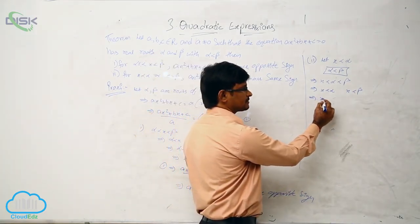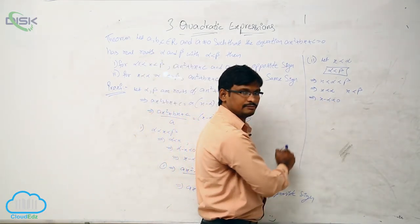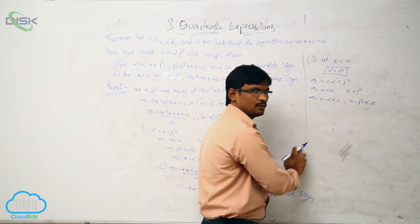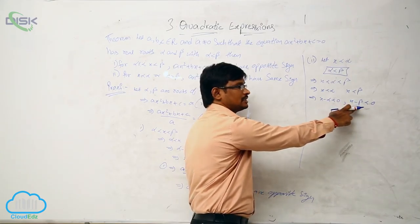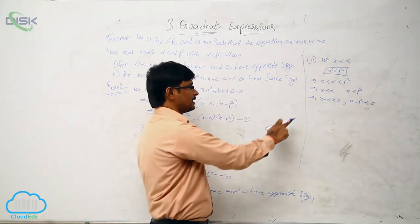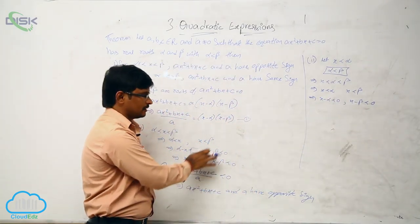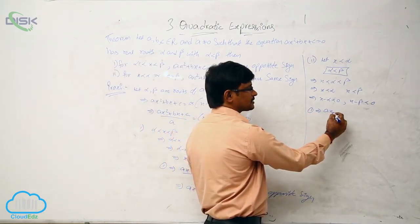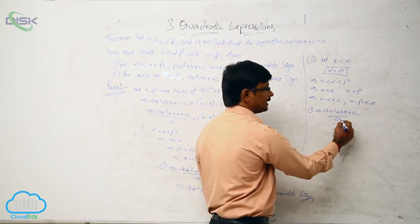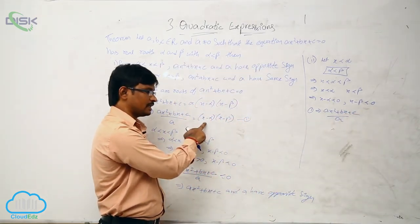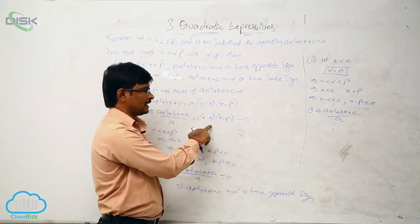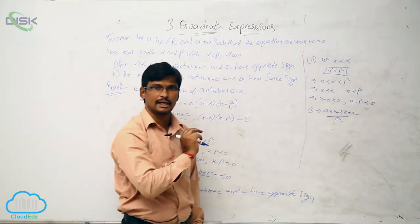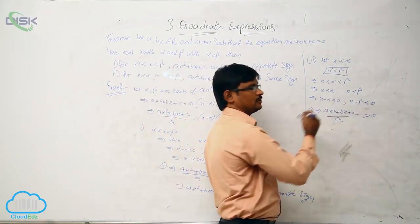So x minus alpha is less than 0, and x minus beta is less than 0 — meaning both are negative. Using equation one, (ax² + bx + c)/a = (x − α)(x − β). x minus alpha is negative, x minus beta is negative. Negative into negative is positive, greater than 0.